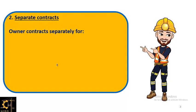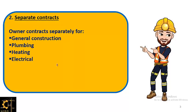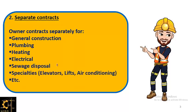The second one is separate contract. As the name suggests, the owner contracts separately for each item or unit — for example, general construction, plumbing, heating, electrical, sewage disposal, and specialties like elevators, lifts, and air conditioning. The owner or client contracts separately with prime contractors for each of these units.